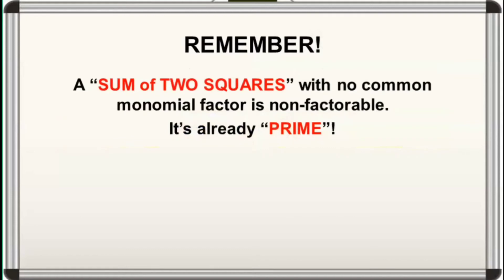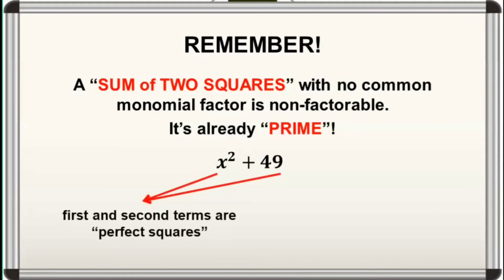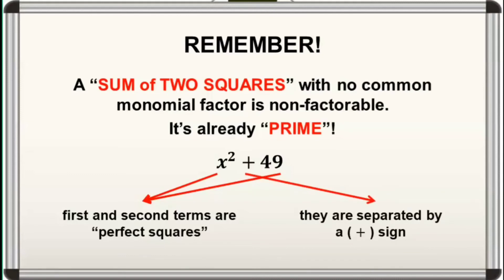We need to remember that a sum of two squares with no common monomial factor is non-factorable — it's already prime. Like for instance, x squared plus 49. Kung makikita natin, ang first at second terms ay perfect squares. Ngunit, sila ay separated ng plus sign. Ibig sabihin, hindi na natin siya pwedeng i-factor out kasi prime na siya.